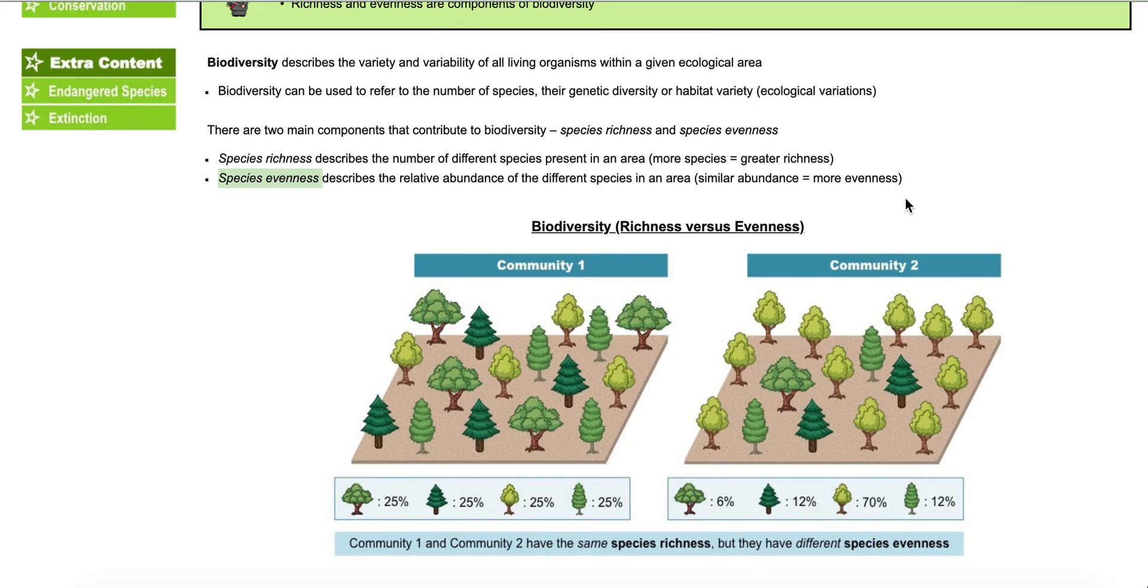So what I mean by that is, for example, in community one, you can see that it's very even. Each species, there's four remember, have 25% or we can count. Let's see, there's one, two, three, four of this species. So that means every species here must have four of them. So I can double check with the pine tree, one, two, three, four, and so forth. So community one is very even.